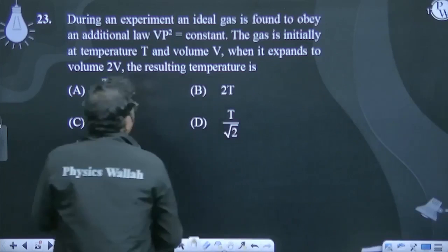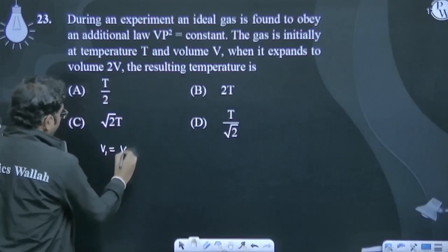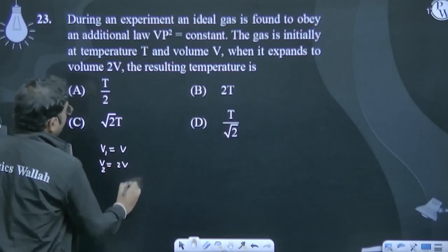So initial volume V₁ is equal to V, final volume V₂ is equal to 2V.